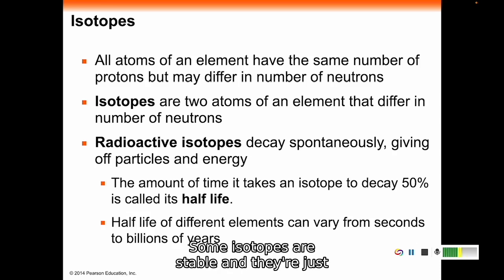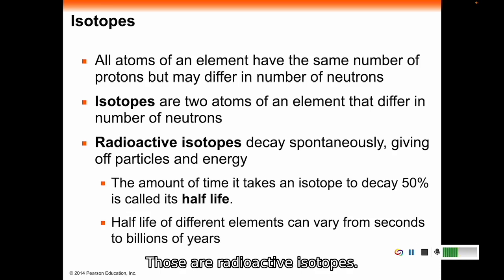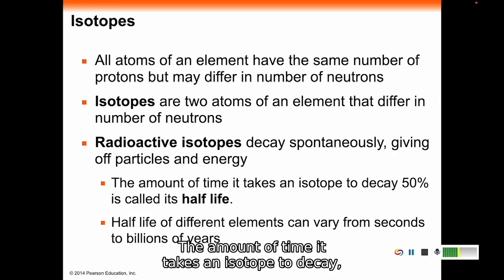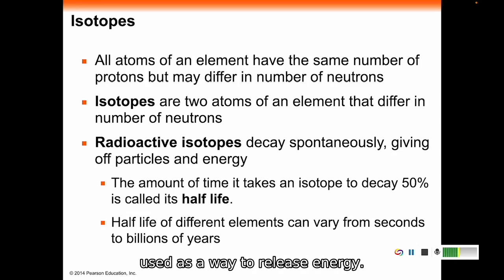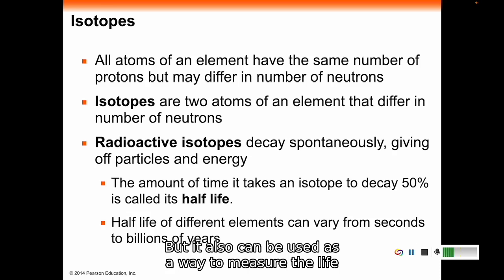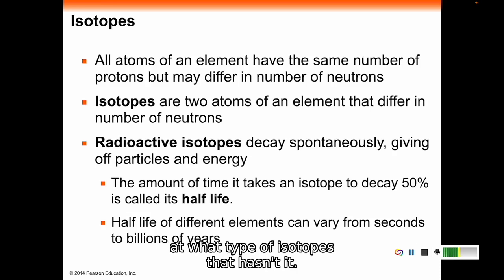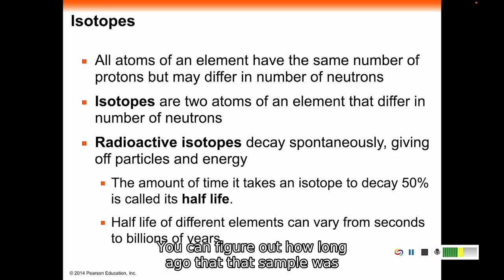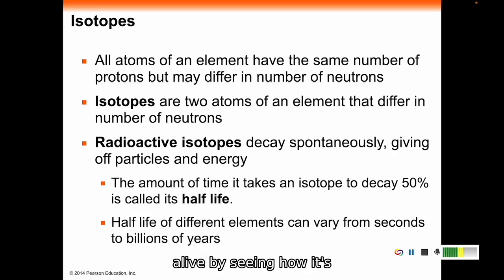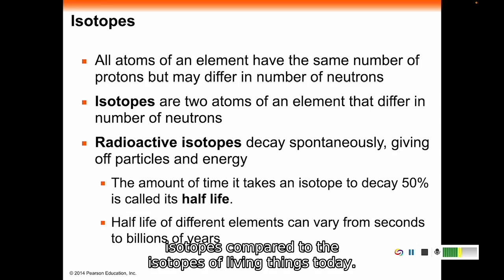Some isotopes are stable and they're just going to hang on to those neutrons. Some isotopes don't like having that number of neutrons and they're going to start shoving out those extra neutrons. Those are radioactive isotopes. They're spontaneously going to get rid of those extra neutrons and release energy. The amount of time it takes an isotope to decay 50% is called its half-life. Different isotopes can have half-lives from a couple of seconds to billions of years. Because radioactive isotopes give off energy, they can be used as a way to release energy, but also as a way to measure the life of something. By looking at what type of isotopes it has, you can figure out how long ago that sample was alive by seeing how its isotopes compared to the isotopes of living things today.